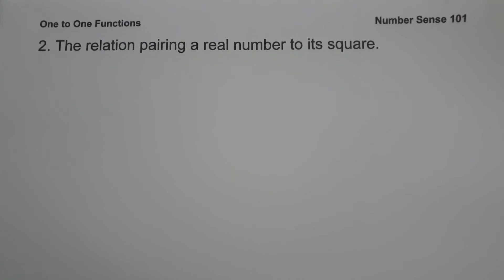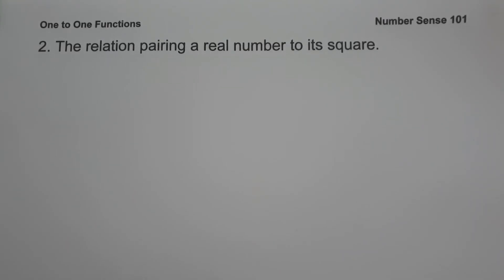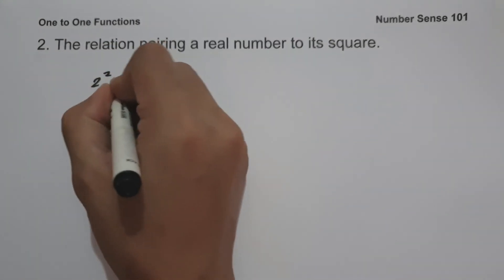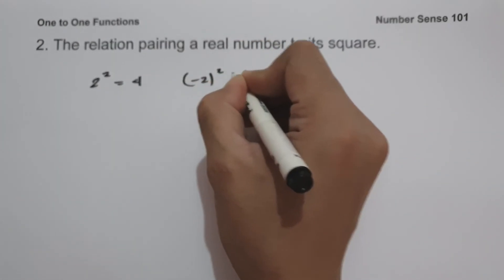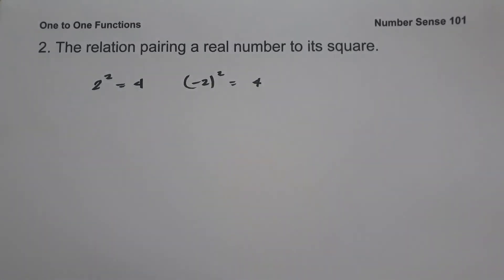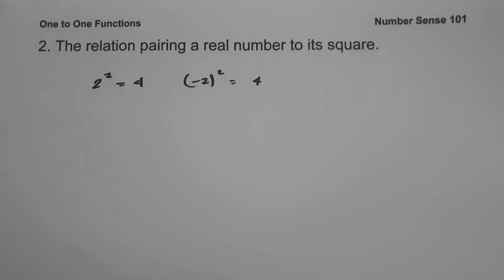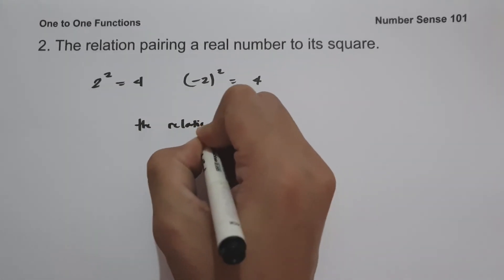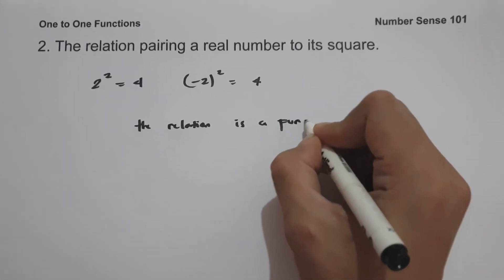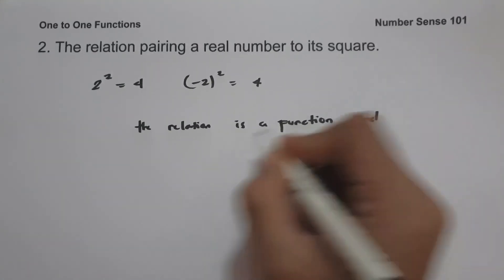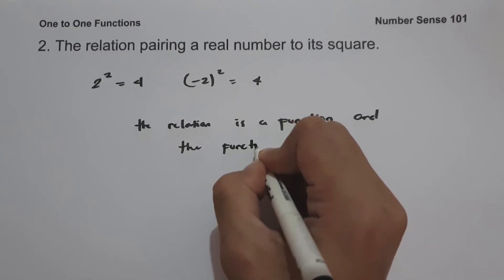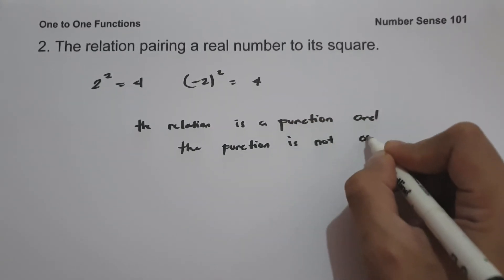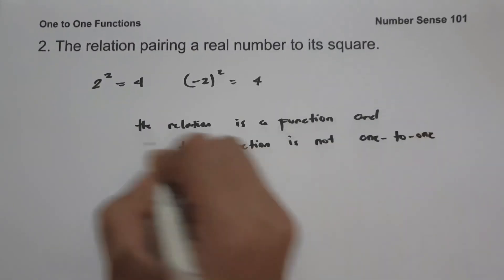On example number two, the relation pairs a real number to its square. This relation is a function because each real number has a unique square. However, 2² = 4 and (-2)² = 4, meaning 2 and -2 share the same square. Therefore, this function is not one-to-one. The relation is a function, but the function is not one-to-one.